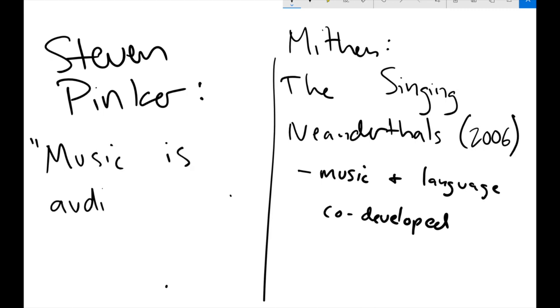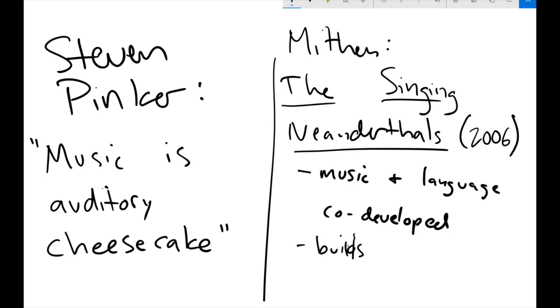in which he says, music is auditory cheesecake. And what he means by this is, Pinker thinks that music is unnecessary. Somebody like Mithin, or a lot of other evolutionary psychologists and archaeologists and anthropologists would say music co-evolved with language, or music has played important roles in society. It brings community together. It's, if you use this sort of animal model, it might be a way in which males try to attract a mate.